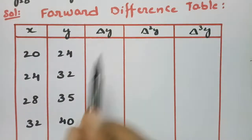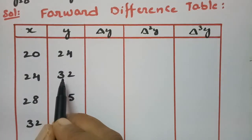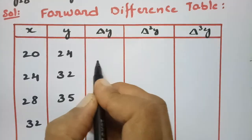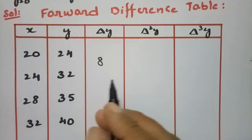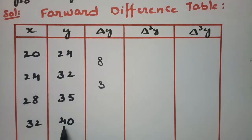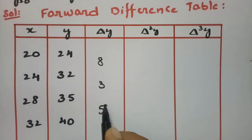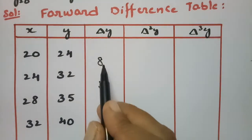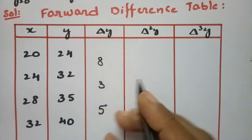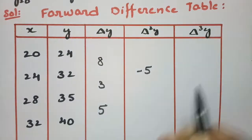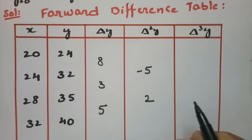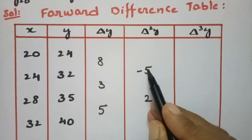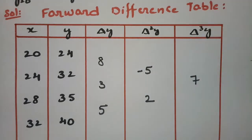The first difference: 32 minus 24 is 8; 35 minus 32 is 3; 40 minus 35 is 5. For the second difference: 3 minus 8 is minus 5; 5 minus 3 is 2. And for the third difference: 2 minus (minus 5) is 7.